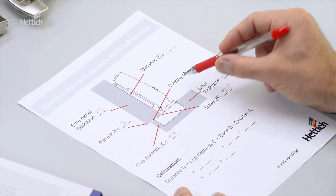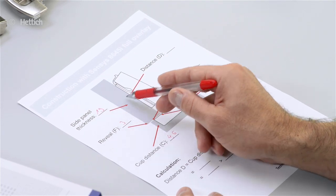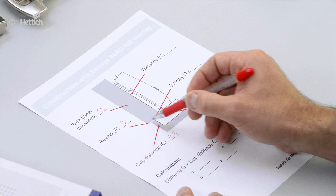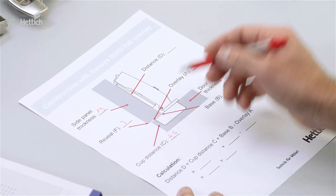What we also need is the overlay. The overlay is the difference of the side panel thickness and the reveal. So in this example we have an overlay of 16mm.